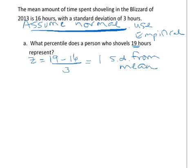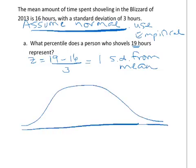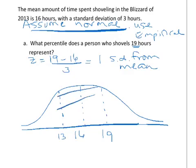The next thing I always tell people to do, especially when I have them on ground for a class, is to draw the normal curve. Any time you're using it, draw it so you can picture what you're trying to find. So this is the mean of 16 and we're up here at 19. I'm going to draw the other side, make it symmetric — so that's 13. From the empirical rule, we know that the shaded middle piece from one standard deviation on either side is 68% of our data, since it's normal.